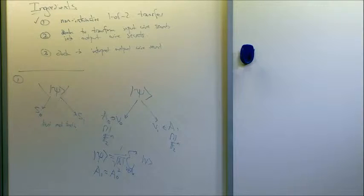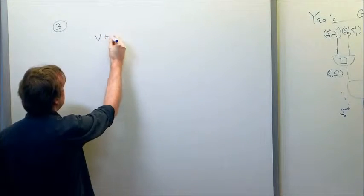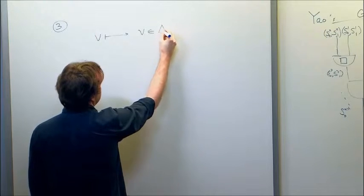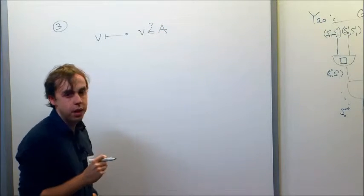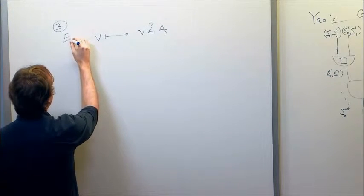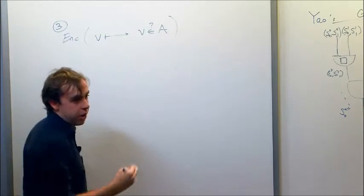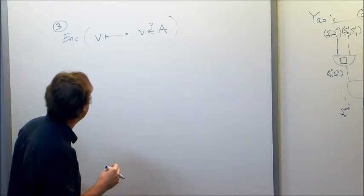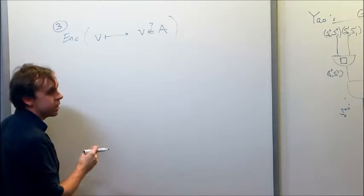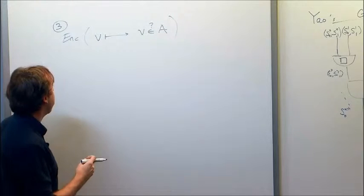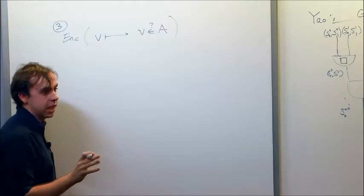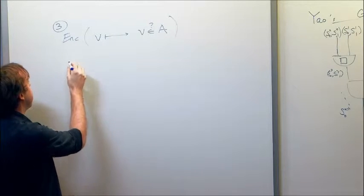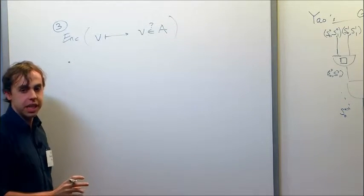For step 3, I want to allow you to identify an element of one subspace or the other. I want to provide this function from v to 'is v a member of A,' and give you an obfuscated form of this function so that you can use it as a black box to evaluate that membership but can't use it to evaluate anything else. This is where we have to make some computational assumption. I'm going to pick a random degree-3 polynomial p(x) = Σ α_{ijk} x_i x_j x_k such that p(v) = 0 for all v in A.